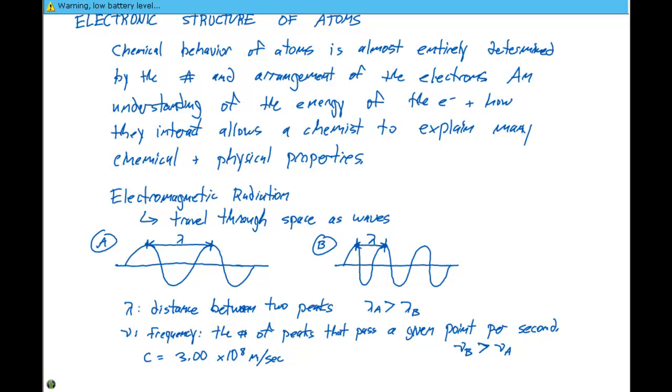And this allows us to come up with a couple relationships. By looking at these diagrams right here of A and B, we can say that the relationship between the frequency, which is NU, is going to be proportional to 1 over the wavelength. And we can come up with a relationship using the speed of light to say that the frequency is gonna equal C divided by the wavelength.